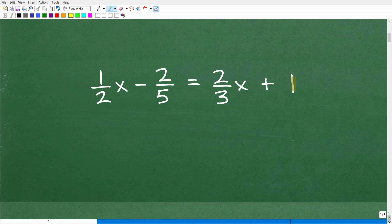So what are we going to have to do here? Well, remember, in general terms, when you're solving equations, you're going to want to move all your variables to the left and all your numbers to the right. So we're going to have to move this two-thirds x over here and link it up with this one-half x, and then we're going to have to move this negative two-fifths over here with this one.